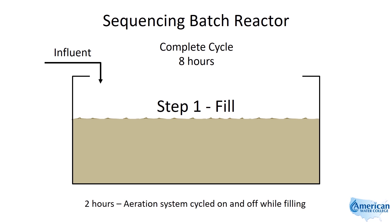Step 1 is the filling process. For this example, the SBR is treating mostly municipal waste with about 10% of the flow coming from industrial dischargers, so the cycle time is 8 hours. The normal cycle time for municipal waste is 4 hours, and for industrial waste is in the range of 4 to 24 hours. Since filling accounts for about 25% of the total cycle, it'll take about 2 hours to fill this tank. The aeration system will cycle on and off intermittently during the fill step to maintain the proper dissolved oxygen levels in preparation for the reaction step.